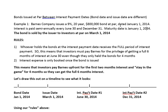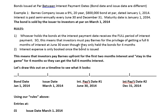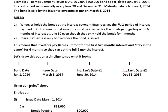Even though the bond is dated January 1st — meaning when it's available to be sold — the investors didn't buy it until March 1st. The first rule is that whoever holds the bonds at the interest payment date, June 30th, 2014, is going to receive the full six months of interest. So the investors have to pay Barnes for the privilege of getting a full six months of interest at June 30th, even though they've only held the bonds for four months. That four-month period is from March 1st to June 30th, so the investors have to pay up front for the first two months — January and February.